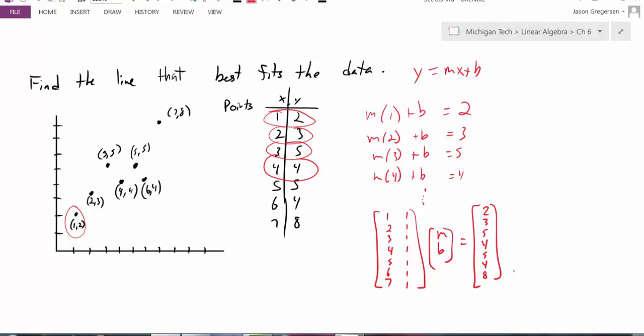So my next question would be, can I find a least squares solution? And I should be able to not only find a least squares solution, but I should be able to find a unique least squares solution. Because when I look at my matrix A, I can see that the columns are linearly independent. I'd like to find the values for m and b that get me closest to my vector b over here.